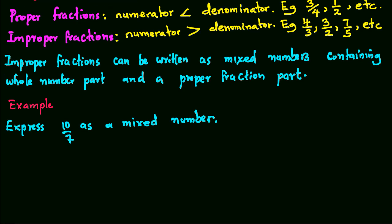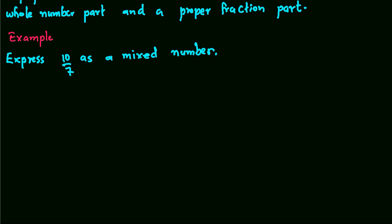For example, 10/7 can be expressed as a mixed number as follows. We divide 10 by 7, so that's 1 remainder 3. In this case, 10/7 will be equal to 1 and 3/7.